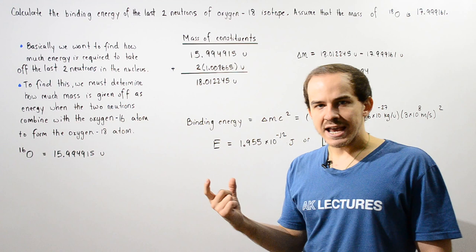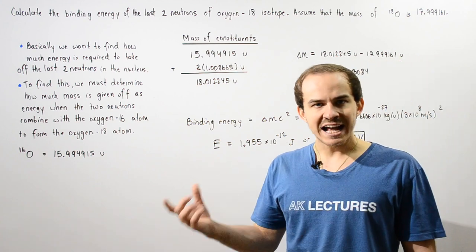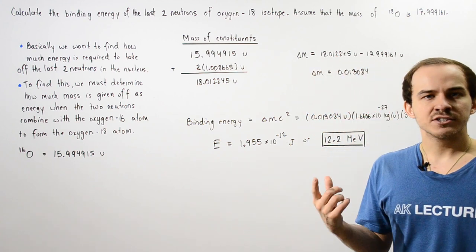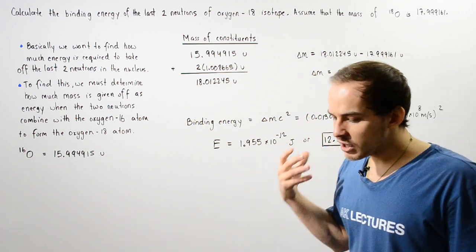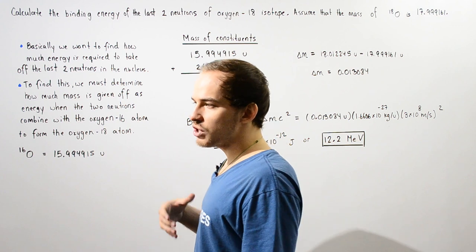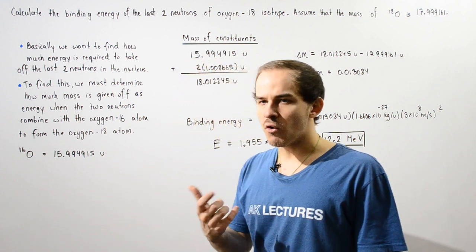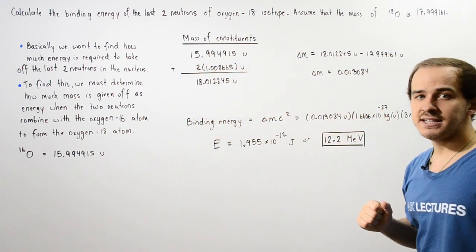We're going to take the most common oxygen isotope in the atmosphere, namely oxygen-16. We're going to take two neutrons and place those two neutrons into the oxygen-16 atom to form the oxygen-18 isotope.